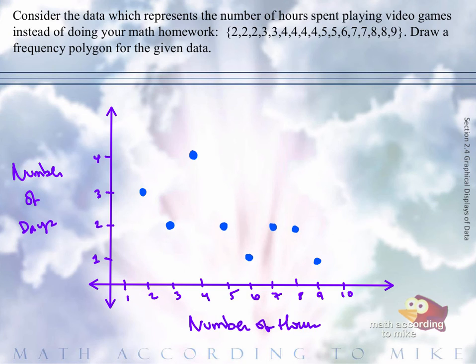Alright, so now what we do is we connect these using line segments. And the first point and the last point go to the value previous to it. So since we started at two, I actually start on the x-axis at one and draw a line segment up to the point at two.